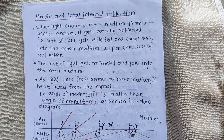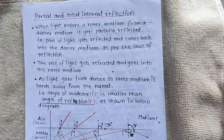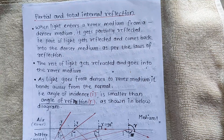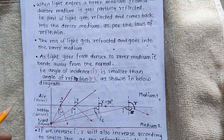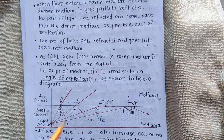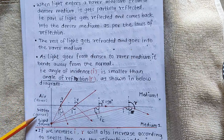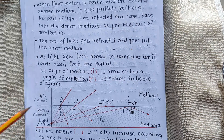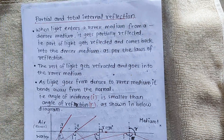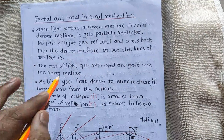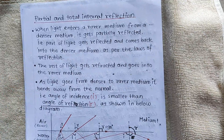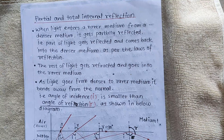In the previous video we covered dispersion of light. Before going into this concept, let's check out the media we are using. In this theory we are going to use air medium which is rarer and water medium which is comparatively denser. This light is going from denser medium to rarer medium.